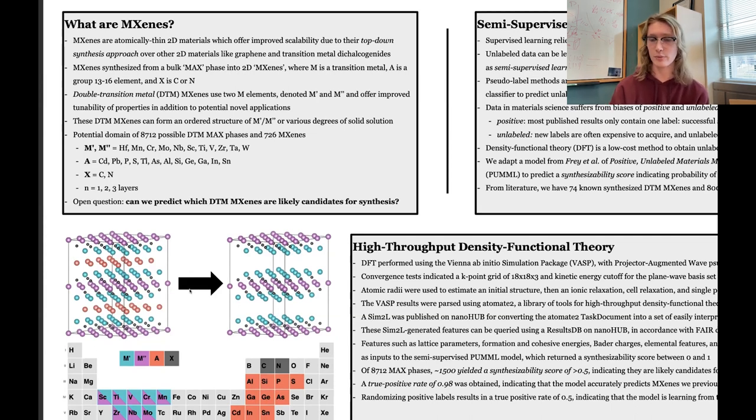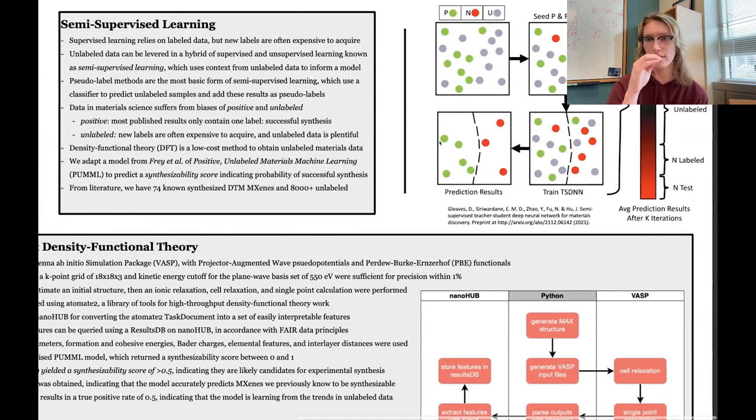This means we have a domain of about 9,000 possible MXenes, and we want to know which are likely candidates for synthesis, because we can't test all 9,000 in a lab. So we want to implement a semi-supervised learning approach to predict which ones we can synthesize.